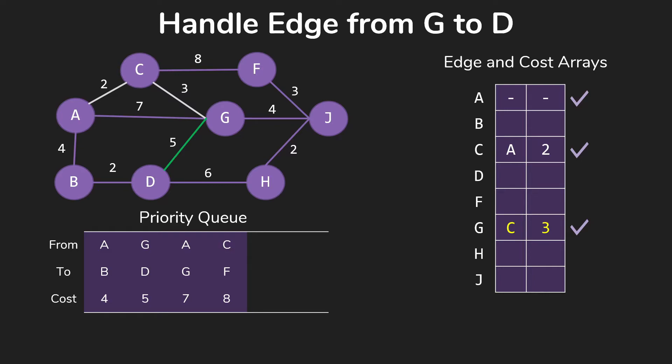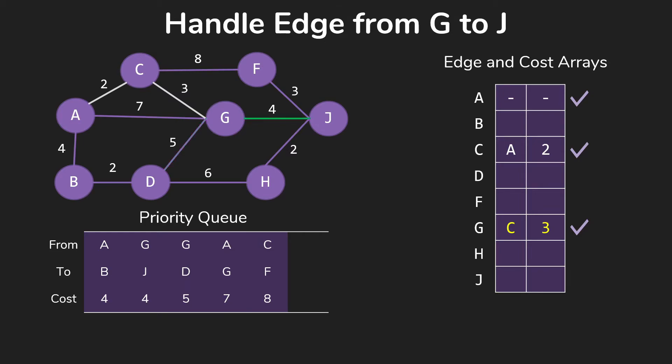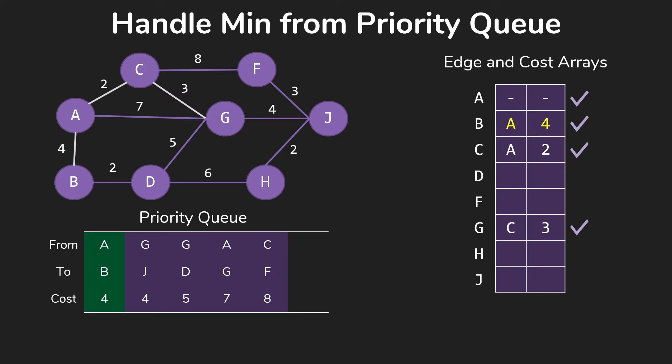GD does give us a new vertex that we don't yet have in our tree. So we add that to our priority queue. And the same for GJ. Now notice in each of these cases, the value going into the priority queue that we're ordering on is just the cost of that one edge. Check the loop conditions and handle our next smallest item from the priority queue.